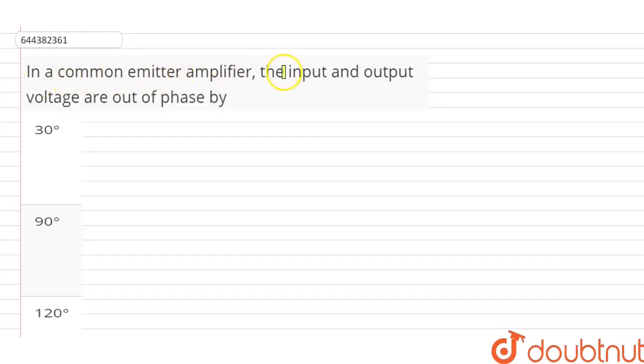In a common emitter amplifier, the input and output voltage are out of phase by?